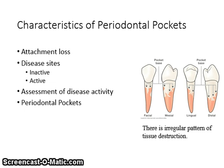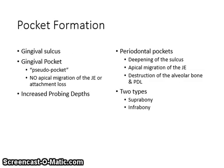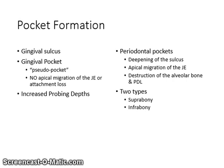The base of the infrabony pocket is located within the cratered-out area of bone alongside the root surface. A diseased site is an area of tissue destruction that may involve only one surface of the tooth, such as the distal surface, or several surfaces, or all four surfaces of the tooth. A gingival pocket is a deepening of the gingival sulcus due to inflammation. Gingival enlargement causes the sulcus to deepen; therefore, it is not a true periodontal pocket and is frequently referred to as a pseudo-pocket.